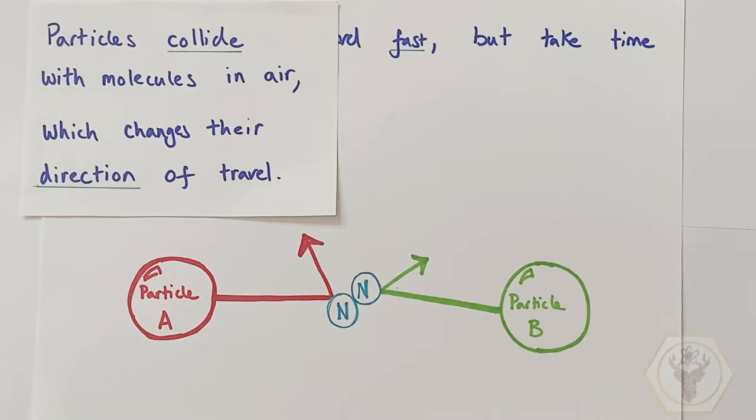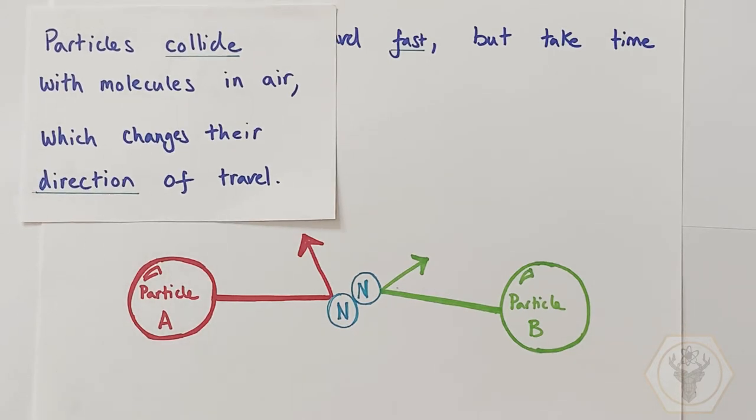So going back to our earlier example, the fragrance particles being sprayed out from the aerosol can are actually colliding with molecules in the air. And that's changing the direction of travel. That means that it's taking them longer to progress to the location where the person's standing to breathe in those fragrance particles, have them interact with their olfactory senses and to smell the fragrance.